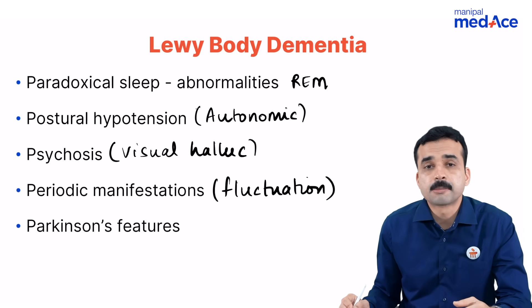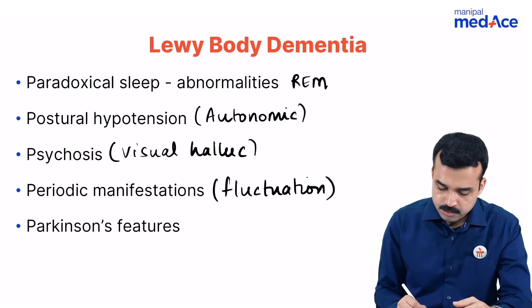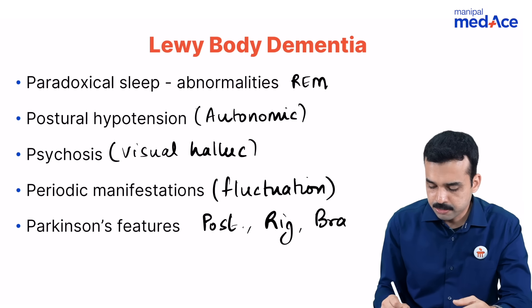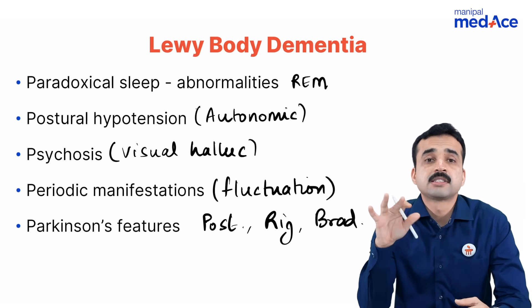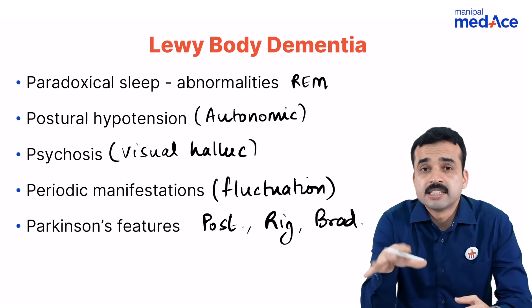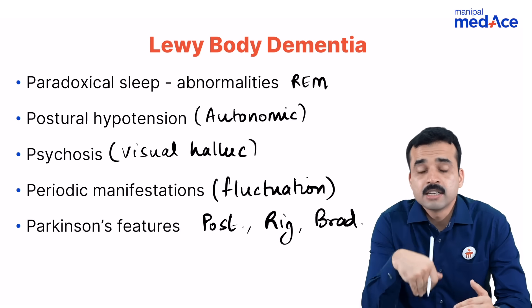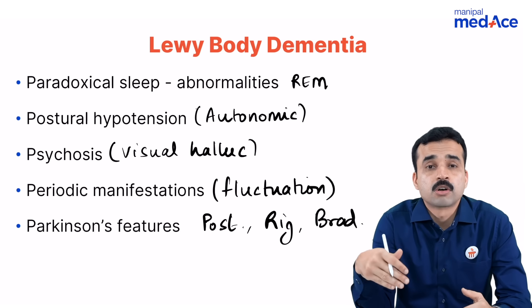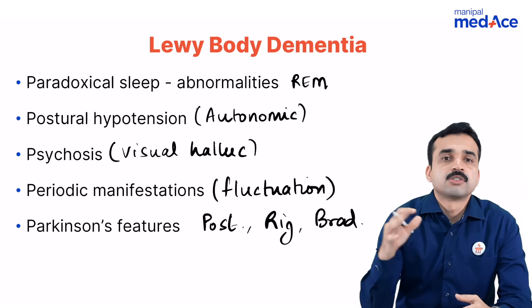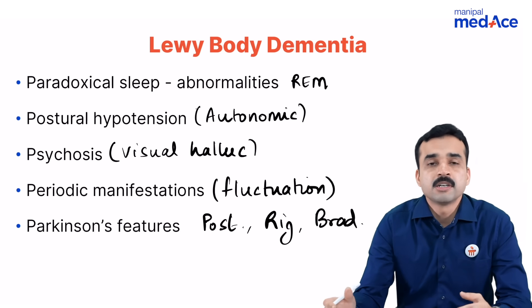The final P represents Parkinson's features, which include postural instability, rigidity, and bradykinesia — except tremors. Tremors are more often seen in Parkinson's disease but not in Parkinson's plus syndromes or atypical Parkinson's such as Lewy body dementia. This is how you can remember all the features of Lewy body dementia.